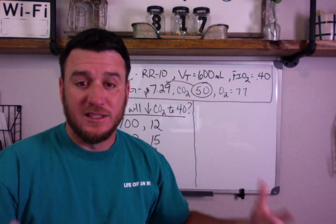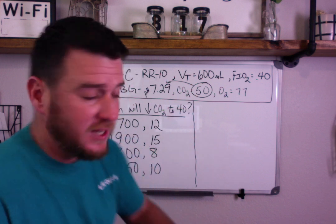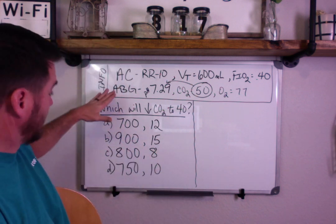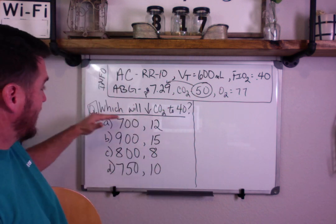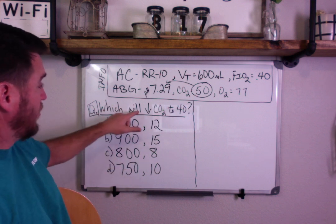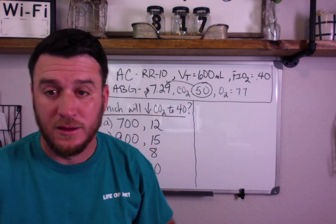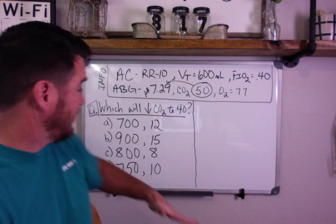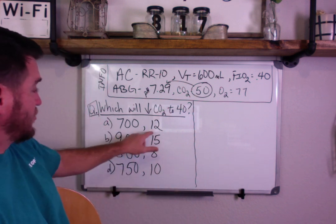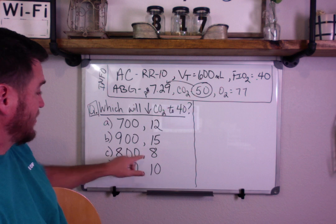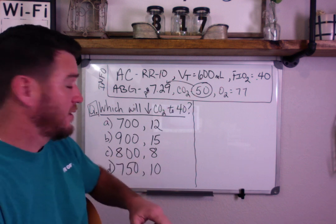Sure enough, the question is: which of the following vent settings will decrease the CO2 to 40? The four options are: 700 mL at rate 12, 900 mL at rate 15, 800 mL at rate 8, or 750 mL at rate 10.